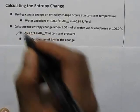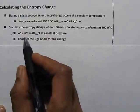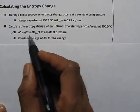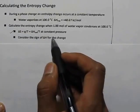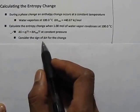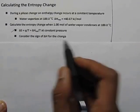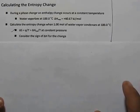We have to use this formula: ΔS = Q/T, where T is temperature in Kelvin. And we have to consider the sign of ΔH for the change.